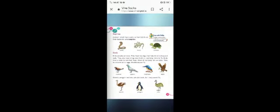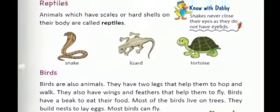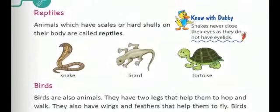Now let us move to the next topic, that is reptiles. Animals which have scales or hard shells on their body are called reptiles. The common reptiles are snake, lizard and tortoise. Snakes have scales on their bodies which help them to crawl on the ground. Snakes do not have legs. Lizards have short legs which help them to move on the wall or on the ground. Tortoise also have short legs and a hard shell on their back.